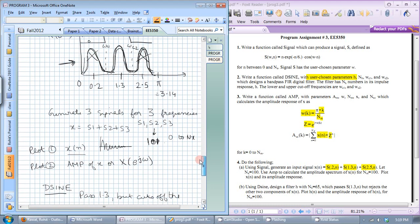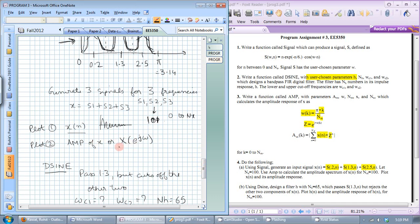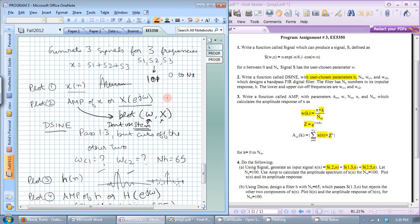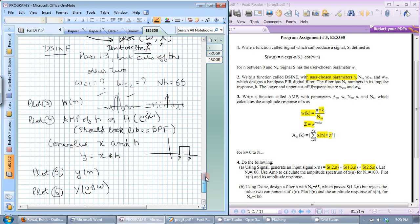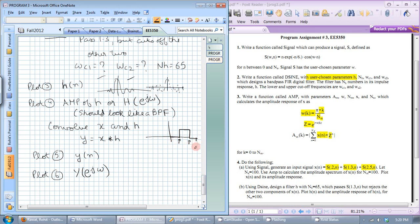And whenever you call the amp function whenever you are making this kind of a plot make sure you do plot omega comma let's say x if x has the Fourier transform. This is the x axis this is the y axis and again for the amp function use the plot function don't use stem because this is supposed to be a continuous function omega is supposed to be continuous even though we have calculated it at specific points. So this plot again would be between 0 and pi and this would be whatever you choose for omega c1 this would be omega c2 this should be close to 1.